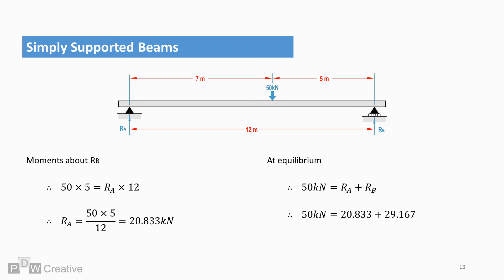And just to confirm, the sum of RA and RB does indeed balance out. Adding them adds up to 50 kN. So now we know the point load reaction forces and the distribution between the points.